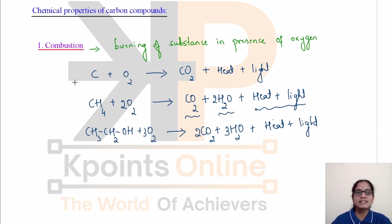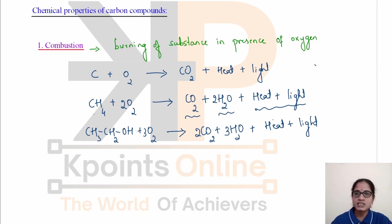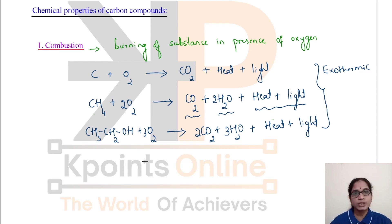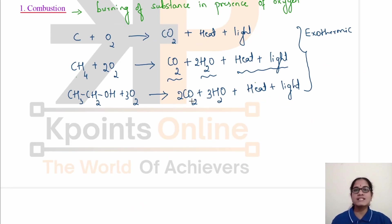Combustion is simply the burning of a substance in the presence of oxygen. These are exothermic reactions, as there is release of energy in the form of heat and light. When hydrocarbons burn, they burn with a flame. The type of flame depends on the type of hydrocarbon. In case of saturated hydrocarbons, we see a clean blue-colored flame. Whereas in case of unsaturated hydrocarbons, we see a yellow smoky flame.